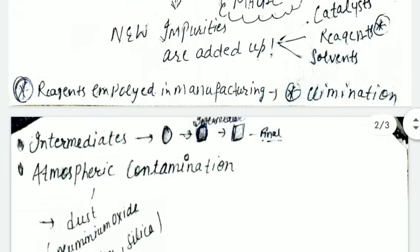The third thing is intermediates. Intermediates are products that form before the final product. When intermediates are present, impurities can add up.